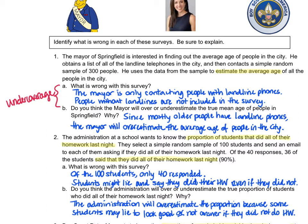In number two, the administration at a school wants to know the proportion of students that did all of their homework last night. They select a simple random sample of 100 students and send an email to each of them asking if they did all their homework last night. They only got 40 responses, and out of those 40, 36 students said they did all their homework, which is 90% of respondents. What's wrong with this survey? Well, only 40 responded — the others refused to respond. This is called non-response.